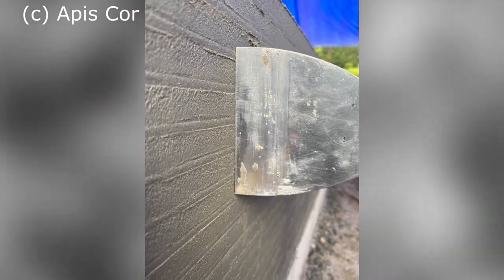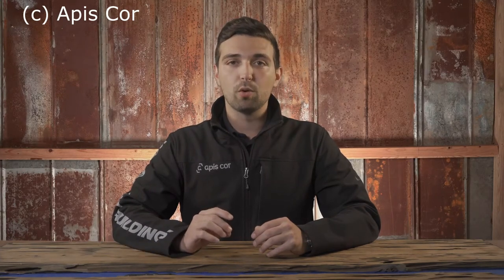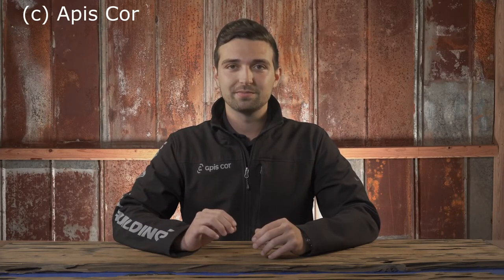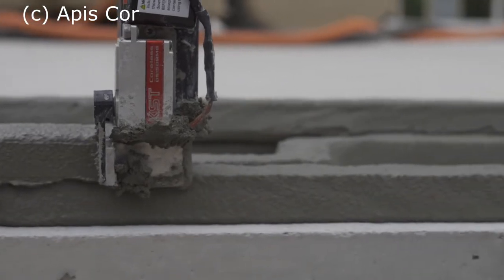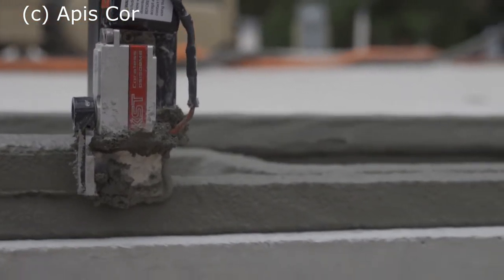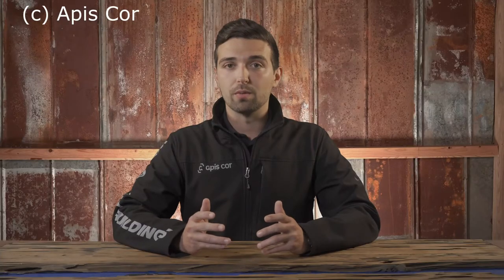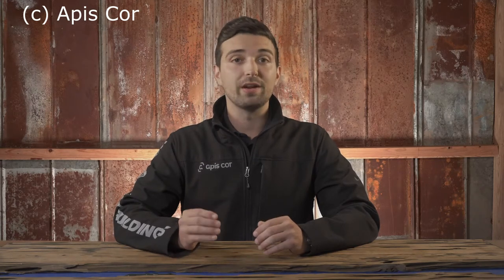The end of the flow time marks the beginning of the setting time. The setting time begins once the material has already adhered to the adjoining layers, and ends once the 3D printed mortar has completely lost its plasticity and is fully hard to the touch. It's important for initial setting time to begin rapidly after the flow time ends because each subsequent layer adds additional weight to the layers below, which will deform if the rate of extrusion outpaces the rate of setting. Once the setting time ends, the curing time begins.